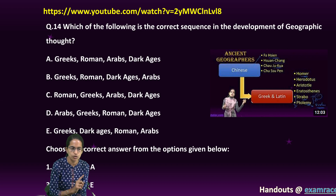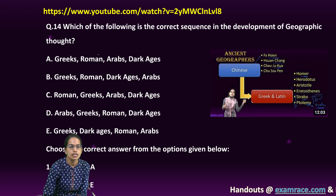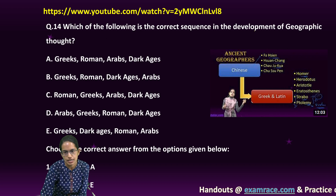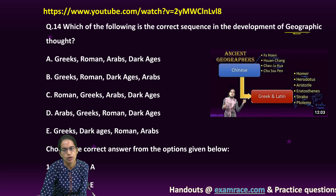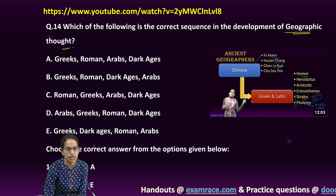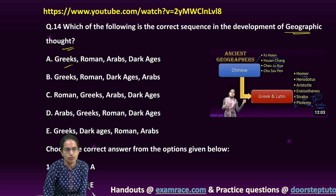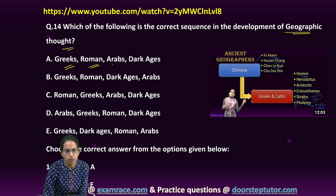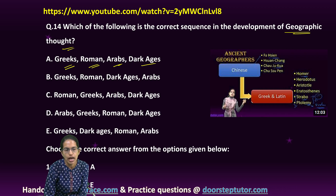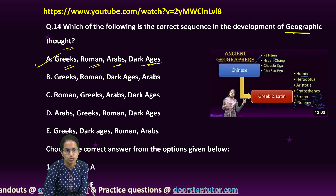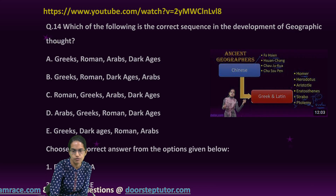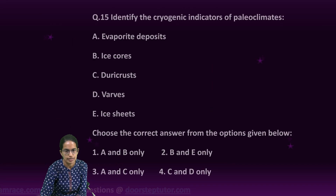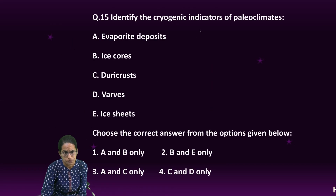Among the correct sequence for the development of geographical thought, the correct one is Greeks followed by Romans, Arabs, and Dark Ages. So option A is the right answer. We have covered that in the video lecture.